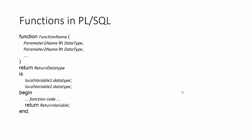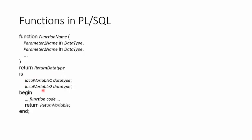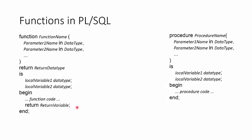In PL/SQL, a function has a function name, certain parameters with data types, and must return something — a return data type like integer or varchar. After the IS or AS statement you define local variables, then BEGIN, then the function code, and at the end it must return a variable. The only difference with a procedure is that a procedure does not return anything — there could be an OUT parameter, but it's not the same as returning something.